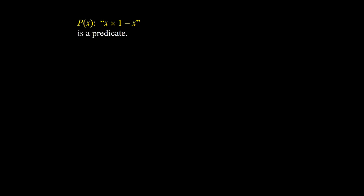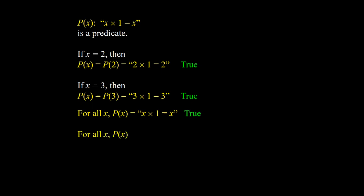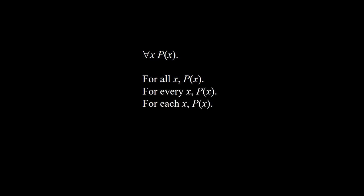Universal quantifier. Let p(x) stand for 'x times 1 equals x'. It is a predicate. If x is 2, then p(2) is '2 times 1 equals 2', and of course this is true. If x is 3, then p(3) is '3 times 1 equals 3', and of course this is true. So the fact is, for all x, x times 1 equals x, which is true. Therefore, for all x, p(x) is a proposition. We use the symbol ∀x p(x), and we read this as: for all x p(x), for every x p(x), for each x p(x).